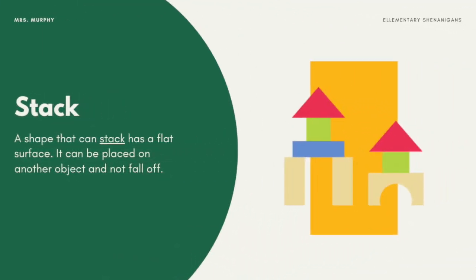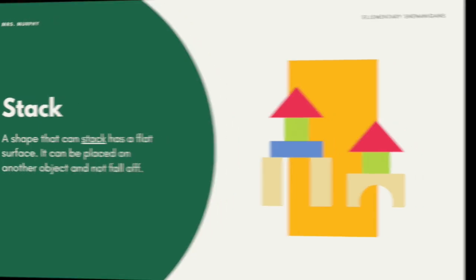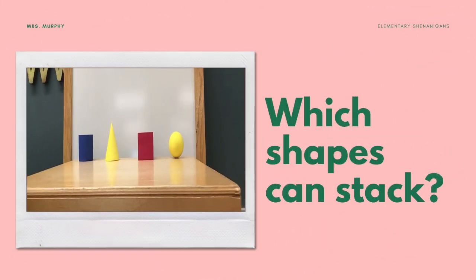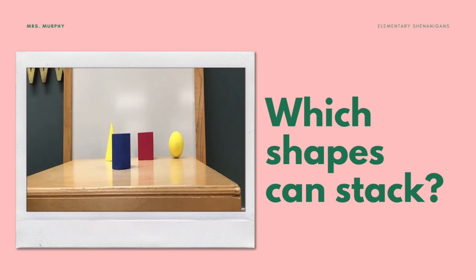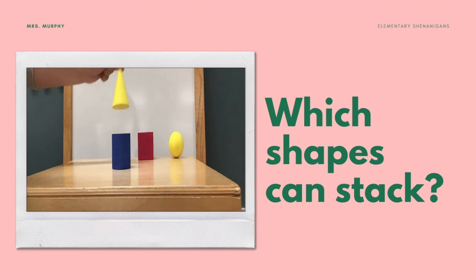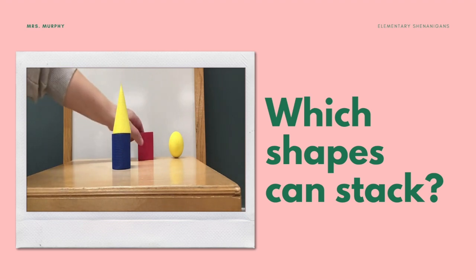Some shapes slide, some shapes roll, and some shapes stack. A shape that can stack has a flat surface and can be placed on top of another object without falling off. Let's test to see which shapes can stack — these will be the ones that are good for building. Let's start with the cylinder: it has two flat surfaces, which is perfect for stacking. The cone also has a flat surface — see how they stack.